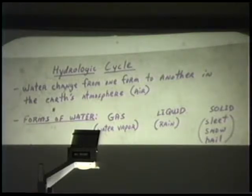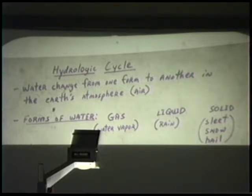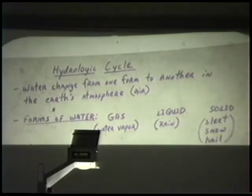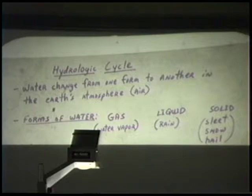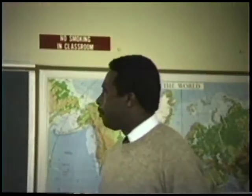We know that water is matter, and we also know that matter has weight. Since matter has weight, it has a tendency to be in one of three forms: it can either be a gas, a liquid, or a solid. Water being matter and having weight also occurs in three forms — in the form of a gas, in the form of a liquid, and in the form of a solid.